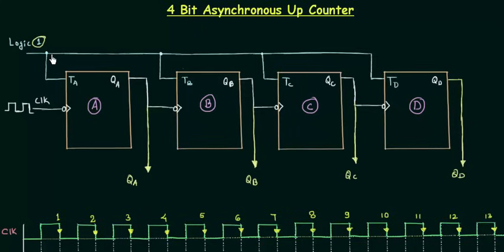This is one change, and definitely the number of flip-flops is changed. Instead of having 3 flip-flops I have 4 flip-flops because I have to make a 4-bit asynchronous counter. Each bit is the output of a flip-flop, so to increase to 4 bits I use 4 flip-flops instead of 3.